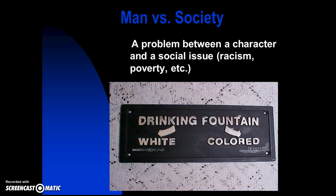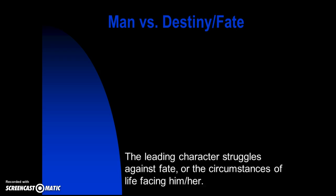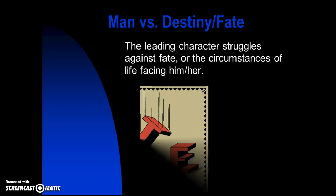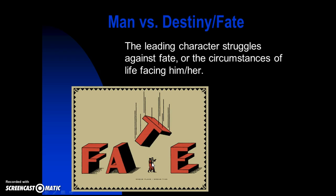The last one is man versus destiny and fate. The character struggles against fate or the circumstances of life facing him or her — we don't have control over it. When we die, that's our destiny; that's something we don't control. If you look at this image, fate — the T is about to drop on this couple and probably hurt them. That is their fate, what was supposed to happen. So that is the other type of external conflict.